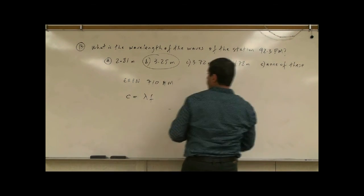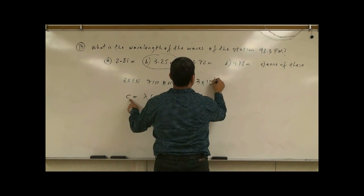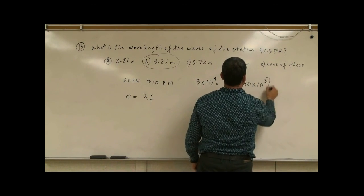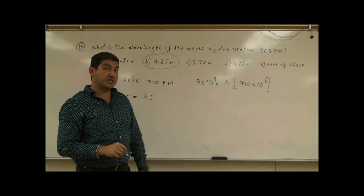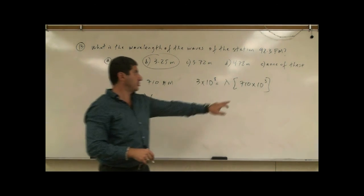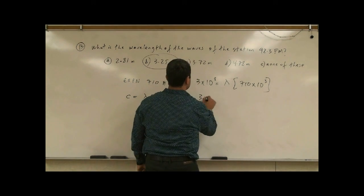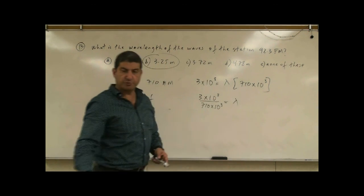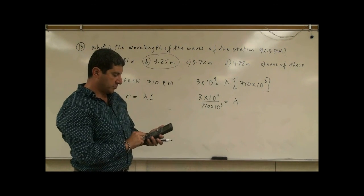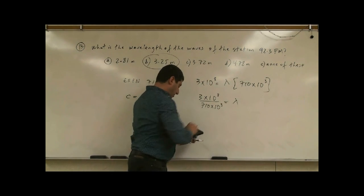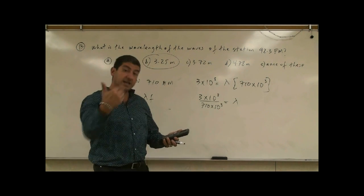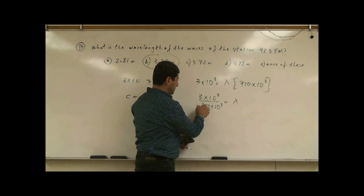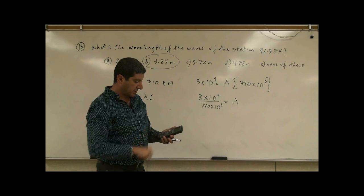And then the speed of light is 3 times 10 to the 8th. The lambda, we don't know. The frequency is 710, so 710 times 10 to the power 3. Notice I changed it from mega to kilo. Kilo is 10 to the 3rd. Then I divide it, and then I'm simply just going to put it into the calculator. 3 times 10 to the power 8 divided by what? 710. Divide it again by 10 to the power 3. 10 to the power 3. So, you divide it, and divide it again one more time. And then you're going to get what?